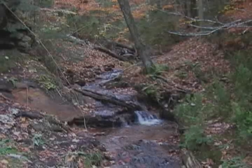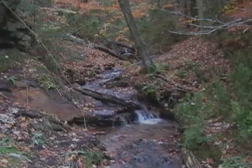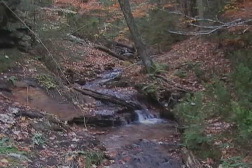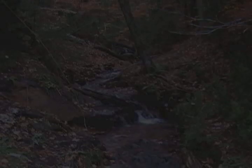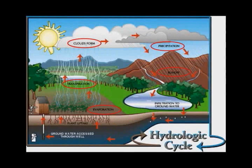This movement, driven by the energy of the sun and the force of gravity, supplies the water needed to support life. Understanding the hydrologic cycle is basic to understanding all water and is a key to the proper management of water resources. Many processes work together to keep the Earth's water moving in a cycle. There are five processes at work in the hydrologic cycle.